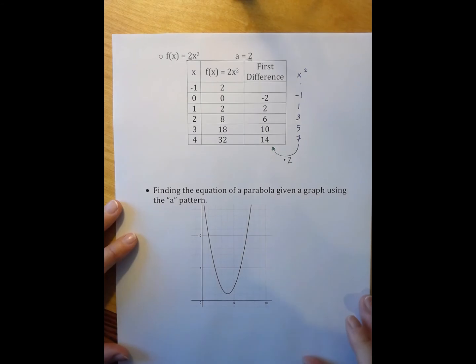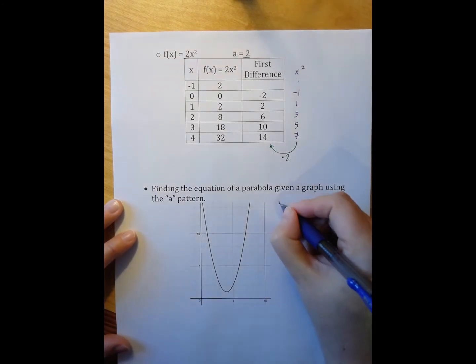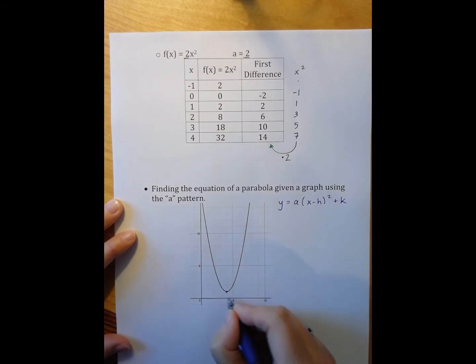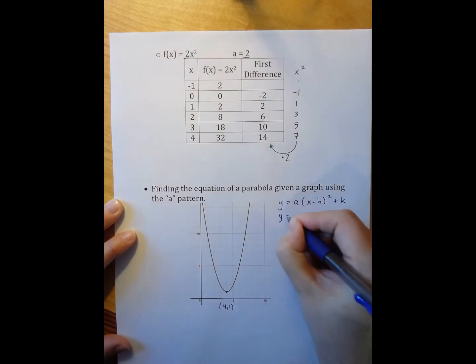In this particular graph, again, I start with my generic vertex form equation. And, again, I can see my vertex. It's right here at 4, 1. So, I can plug that in. y equals a times x minus h. So, x minus 4, quantity squared, plus 1.